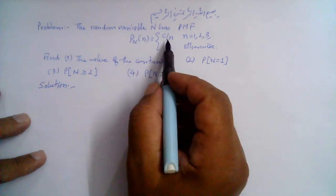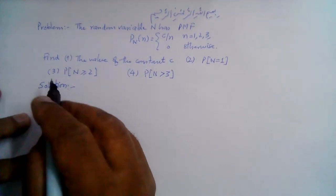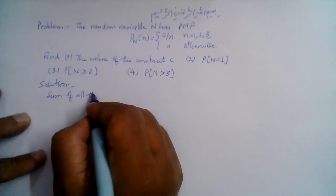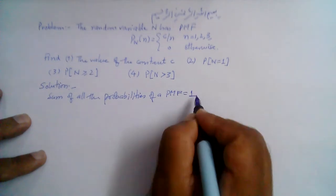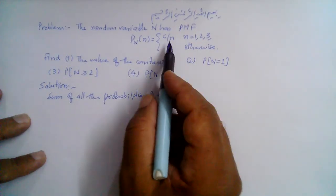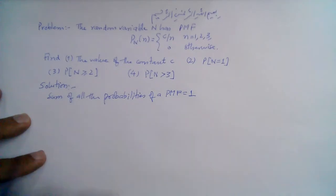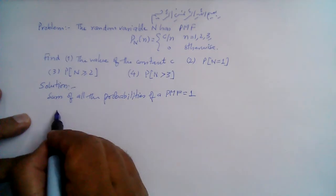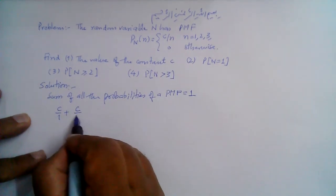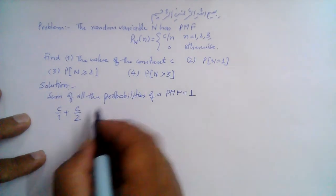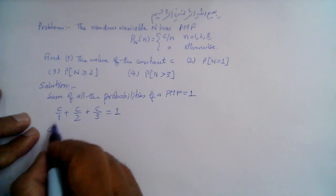This is the PMF of the random variable N, and c is a constant. The sum of all probabilities of a PMF equals 1. So the probability that N takes on values 1, 2, and 3 — this is c/n — gives us: when n=1, c/1; when n=2, c/2; and when n=3, c/3. The sum of these probabilities must equal 1.